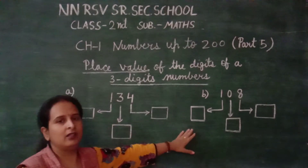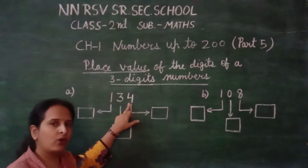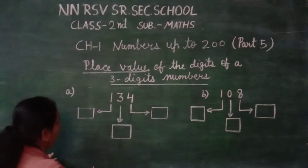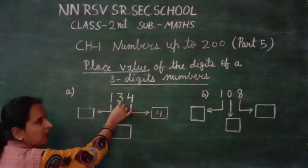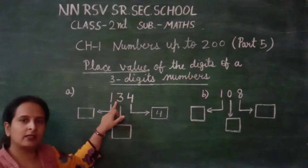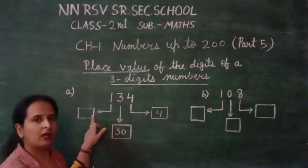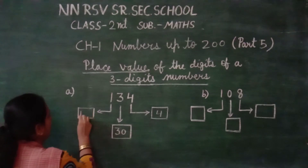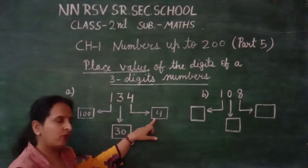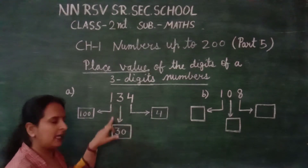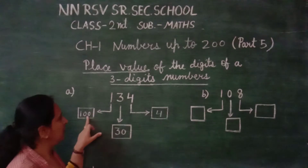There are 2 questions. With the help of these questions, we have to find the place values. Here is the number 134. 4 is in the 1's place — 4 ones, which we can write as 4. 3 is in the 10's place — 3 tens means 30. And 1 is in the 100's place, so the place value of 1 is 100.